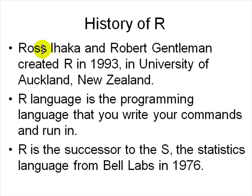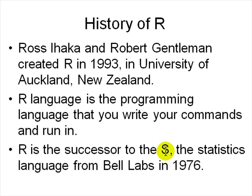R was created by Ross Ihaka and Robert Gentleman in 1993 at the University of Auckland in New Zealand. It's a programming language in which you write your commands and run them. Before R, there was a language called S from Bell Labs in 1976. R is a free version; S was probably not free.